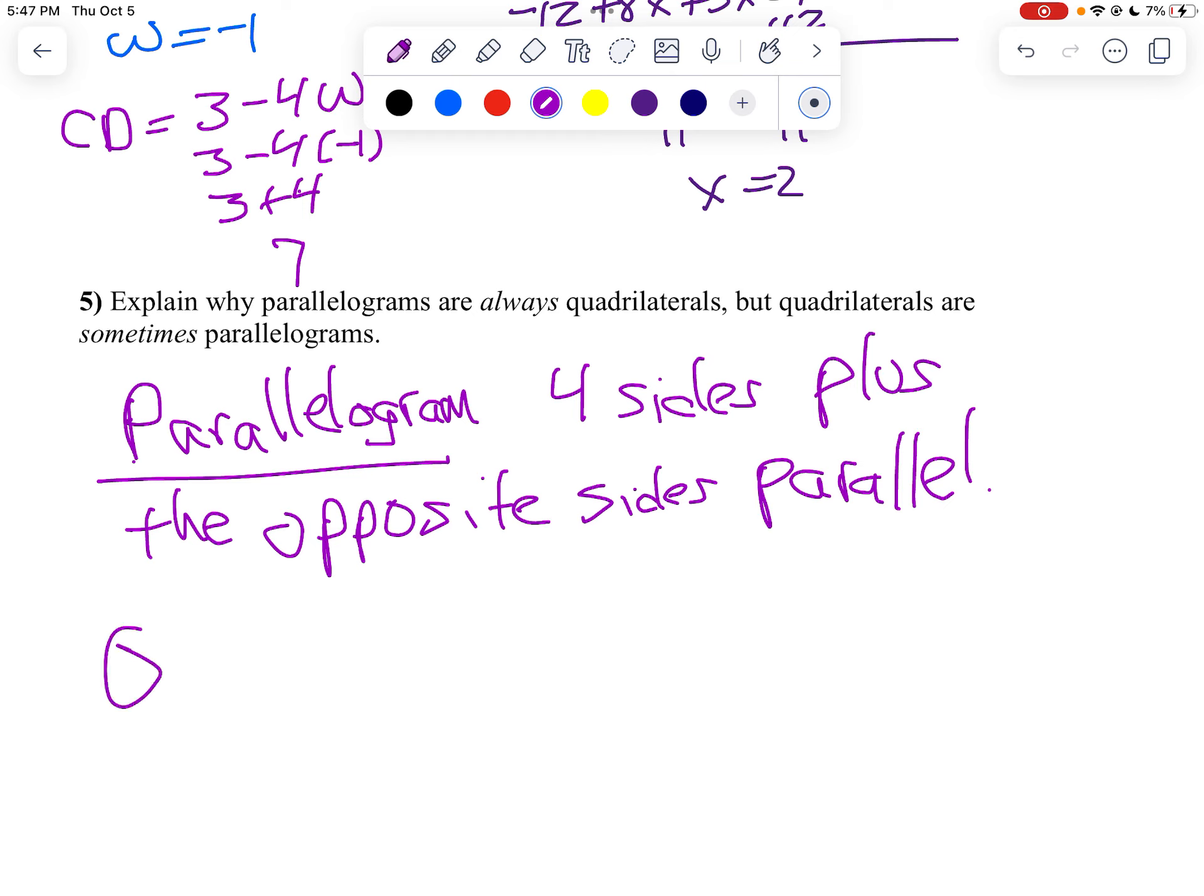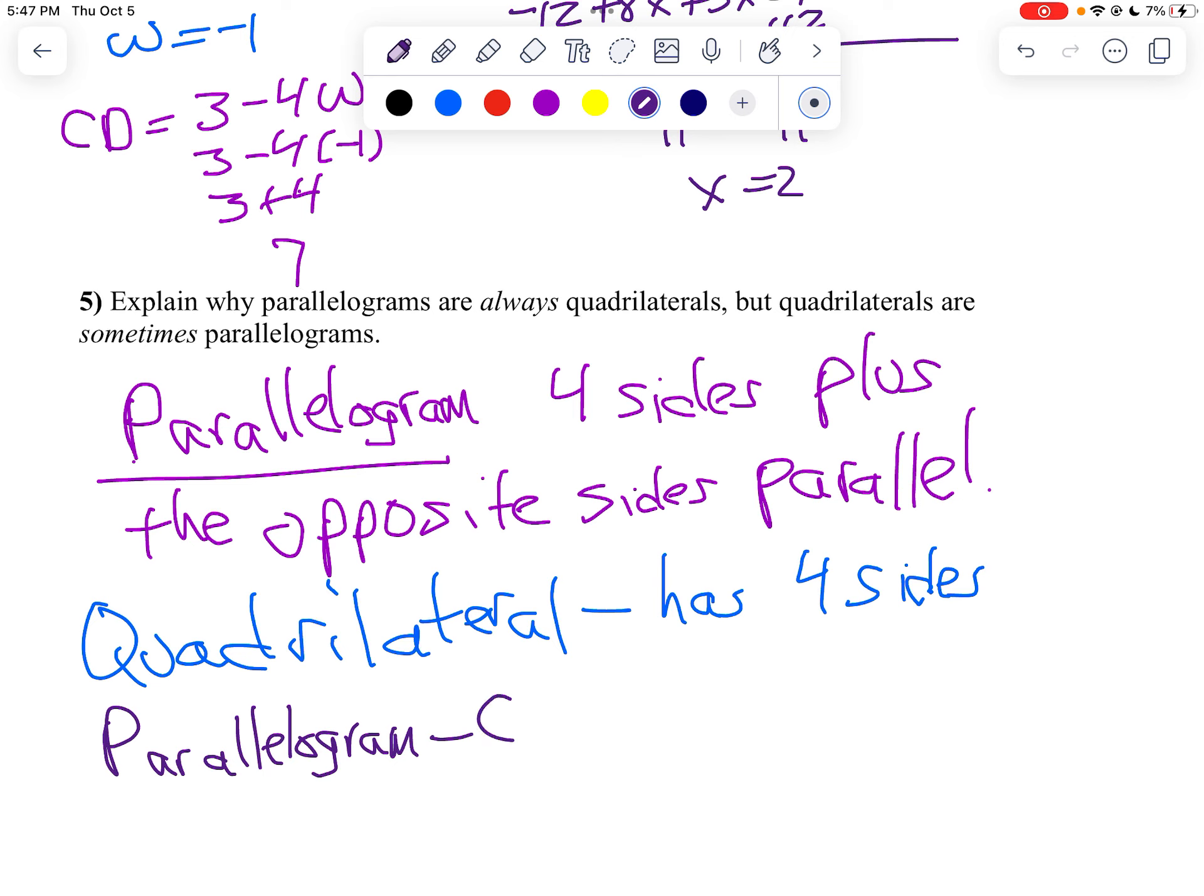Whereas a quadrilateral, let me change colors here, just has four sides. There's no condition about which, if any sides are parallel. So a parallelogram, if we think about it, is a quadrilateral plus opposite sides parallel.